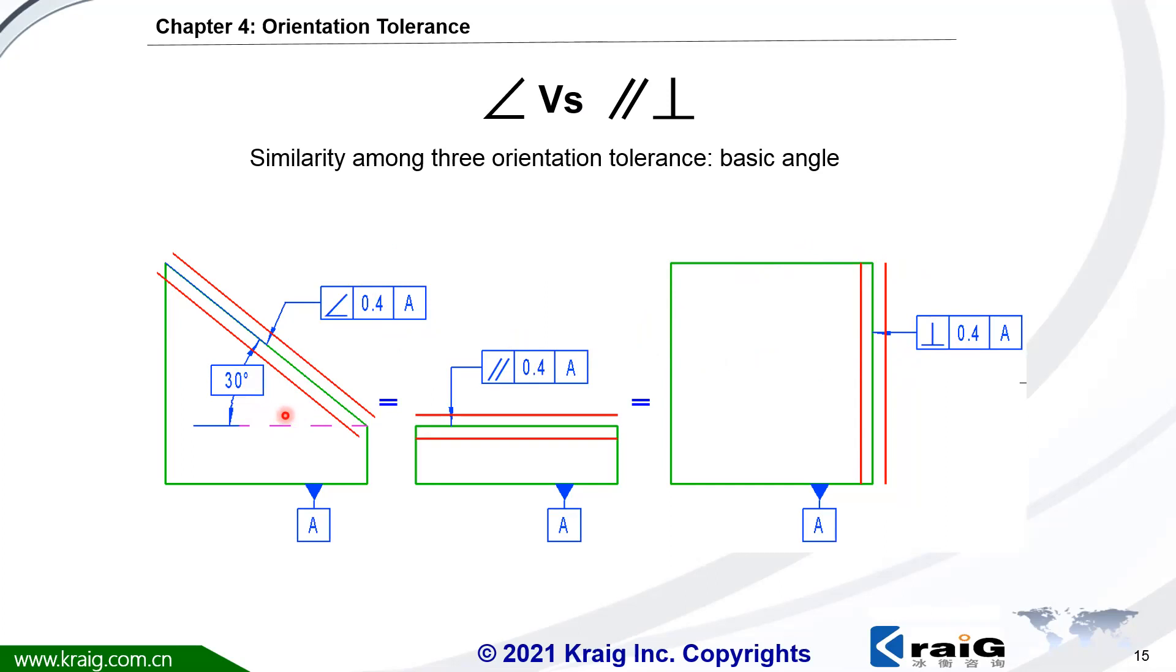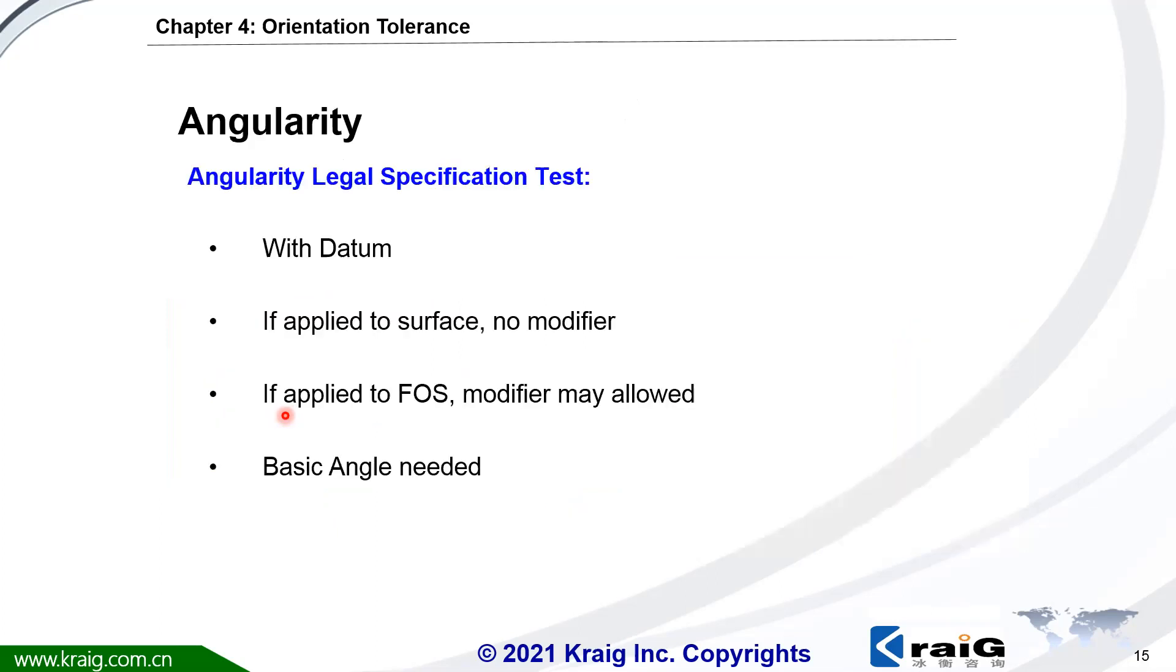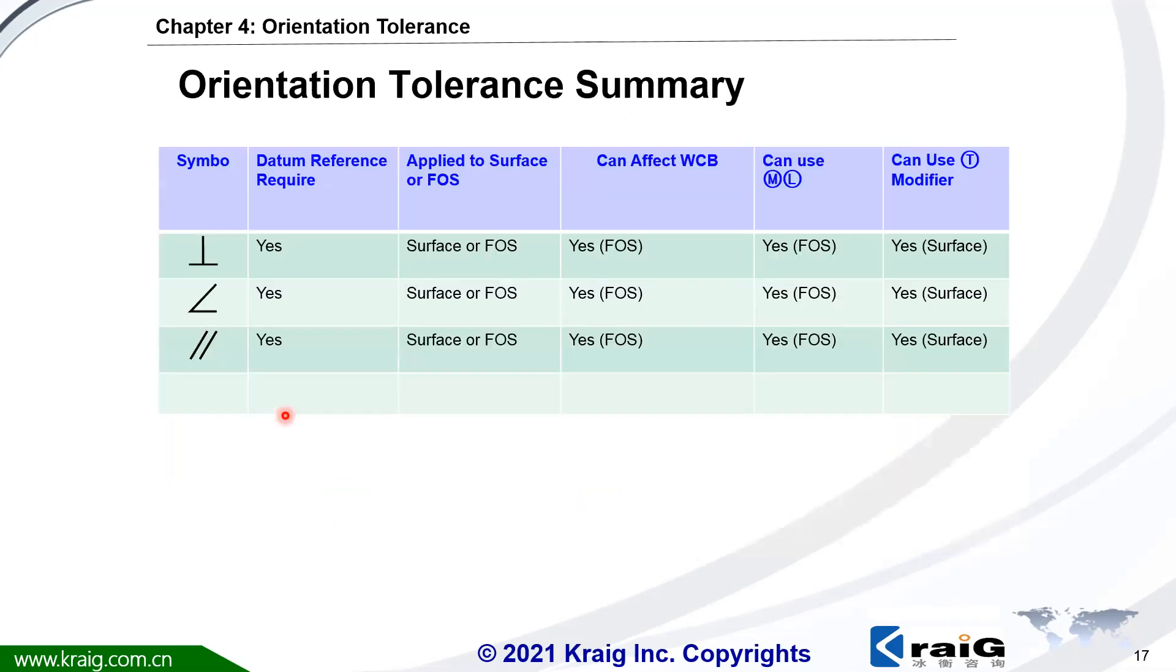They could also be used to control orientation as well as the form tolerance. All of them could be used to the feature of size. In that case, they can add MMC modifier or LMC modifier. And all of them can be combined together with tangent plane modifier. So, from here, this comparison is pretty similar here.